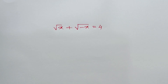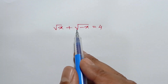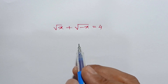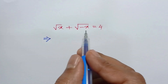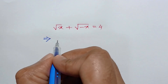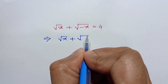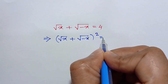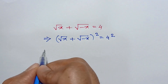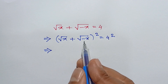Hi everyone. In this video I am going to show how to solve square root of x plus square root of negative x is equal to 4. Taking a square on both sides, we will have square root of x plus square root of negative x, whole squared, is equal to 4 squared. According to the formula, a plus b whole square is equal to a squared plus twice ab plus b squared.